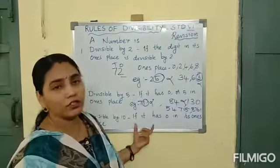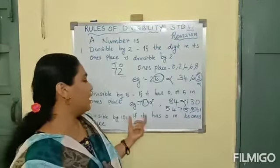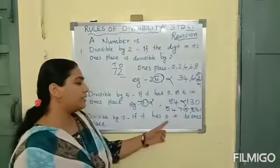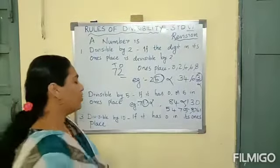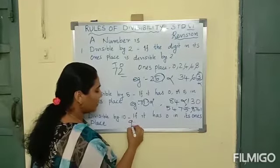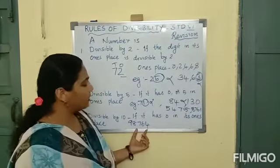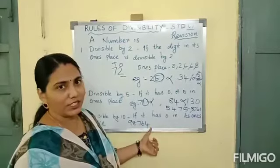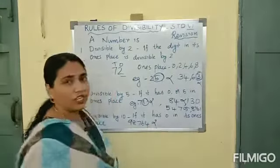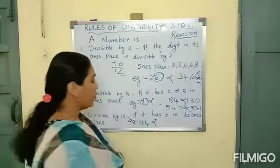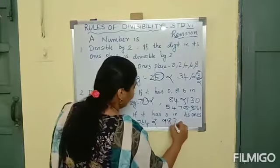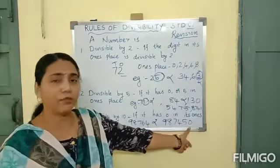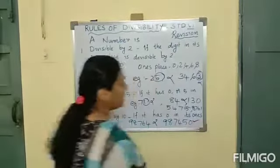Similarly, divisibility by 10 — you can check whether you can divide a number by 10 by checking if 0 is in its ones place. Only if 0 comes in the ones place can you divide that number by 10. For example, 98,764 — can you divide this by 10? No, because 4 is in the ones place. But if you take 98,7450, in the ones place 0 is there, so you can divide this number by 10.